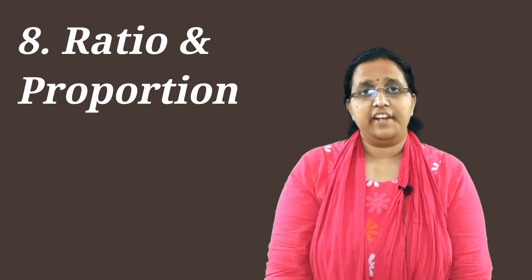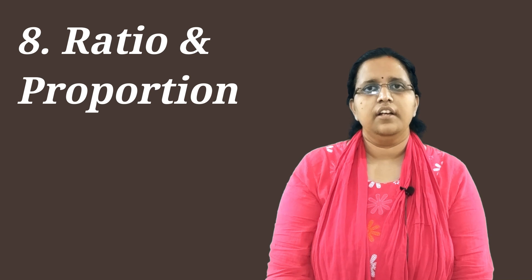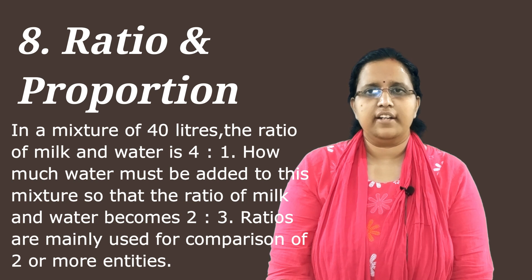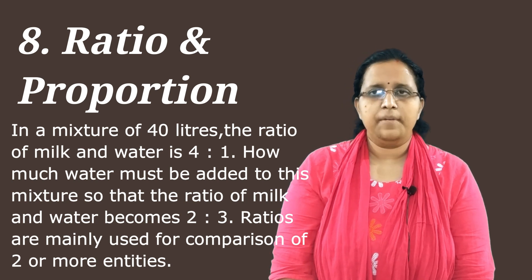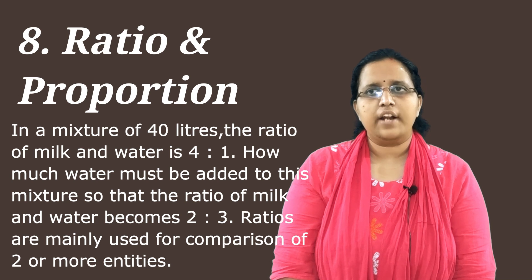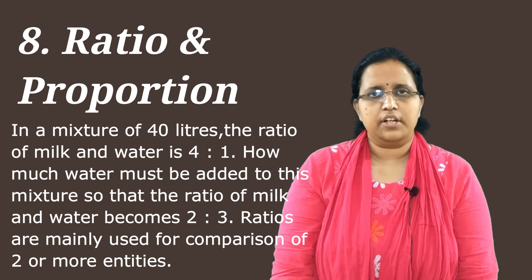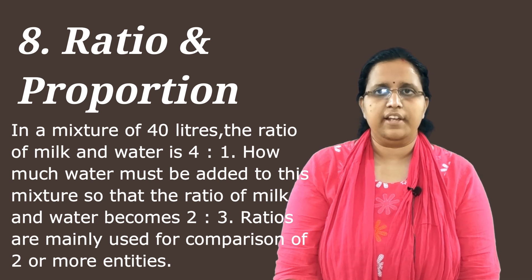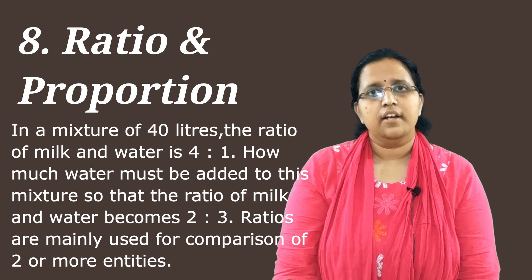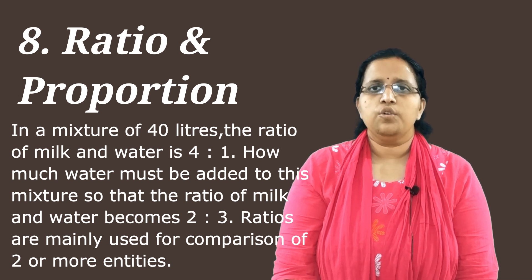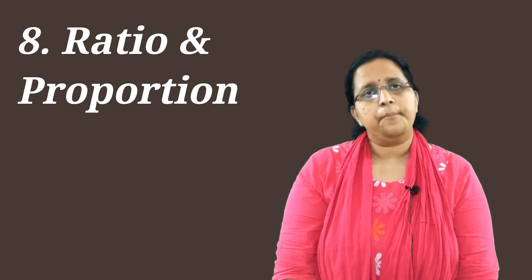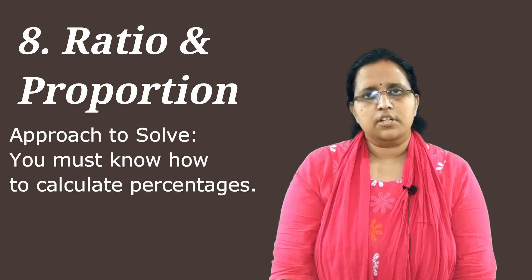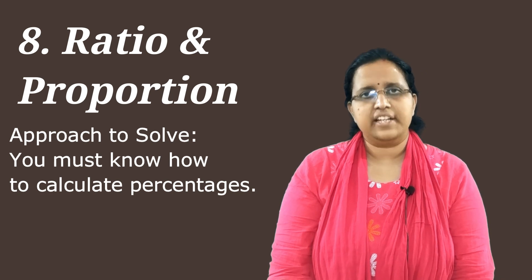The eighth topic is ratio and proportion. For example: 'In a mixture of 40 liters, the ratio of milk and water is 4:1. How much water must be added so that the ratio of milk and water becomes 2:3?' Ratios are mainly used for comparison of two or more entities, and the approach requires you to know how to calculate percentages.